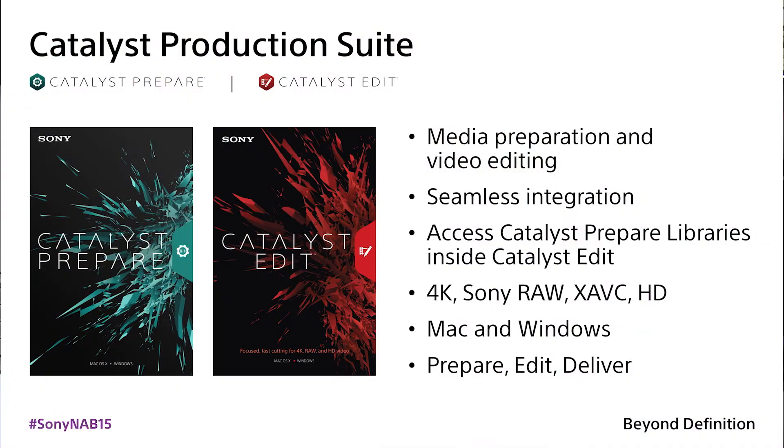Now, the biggest thing is we've come out with what we call our Catalyst Production Suite. You may have been aware of the Catalyst Browse software and the Catalyst Prepare, but now we've launched Catalyst Edit as part of the production suite. You cannot get it standalone, but for $400 you can get the Browse, the Prepare, and the Edit package all together — encode and decode capabilities, all the XAVC codecs, not just IntraFrame, not just LongGOP, but also XAVC-S, and also working in the raw space. You can do all of that within that suite of products for just $400.